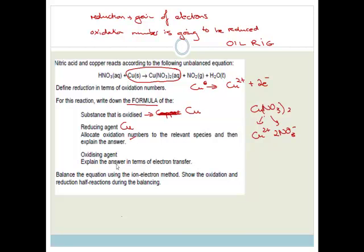Now, the oxidizing agent is the one that's being reduced — the species that is gaining electrons. So we need to decide which species has gained electrons, and they want the answer explained in terms of electron transfer, not oxidation numbers. Obviously, if copper is giving away electrons, what is being reduced is your nitric acid. Nitric acid is the oxidizing agent because it is gaining electrons — HNO₃ breaks up to form NO₂ and water, and the nitrate gains electrons from the copper to form copper nitrate.